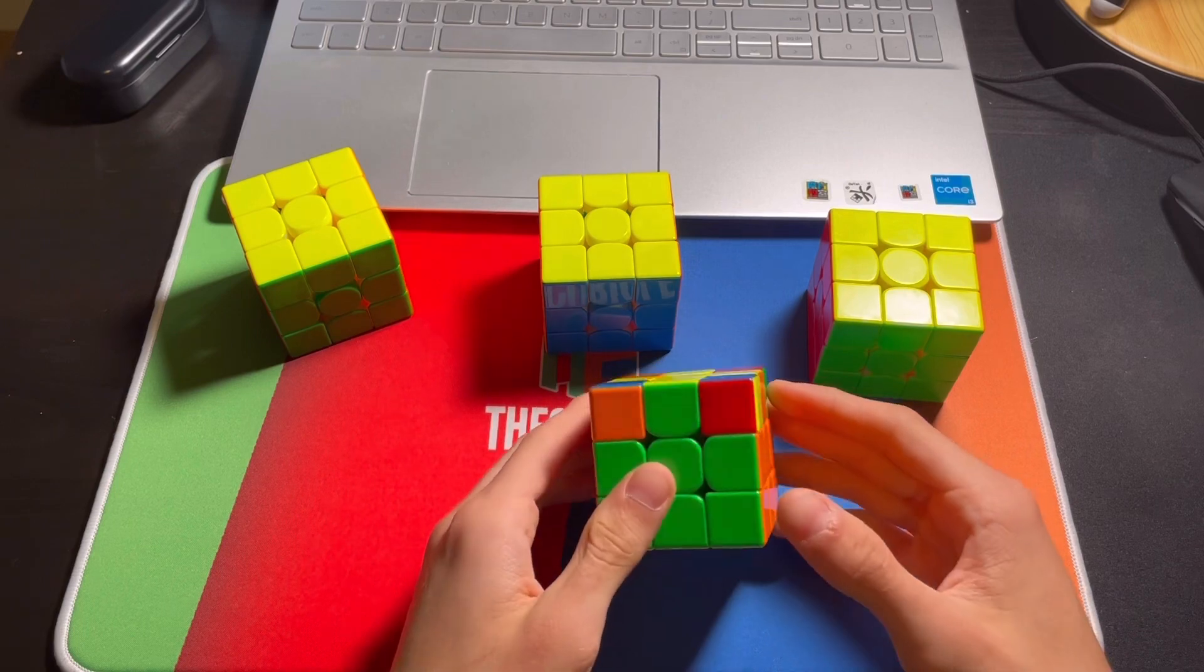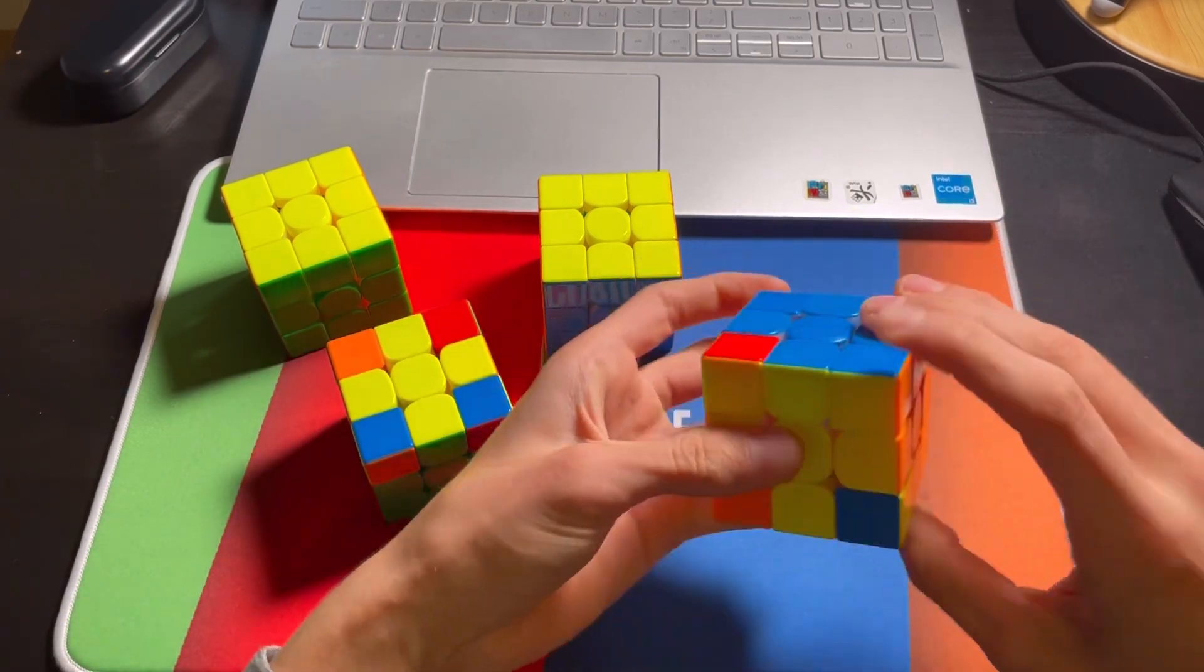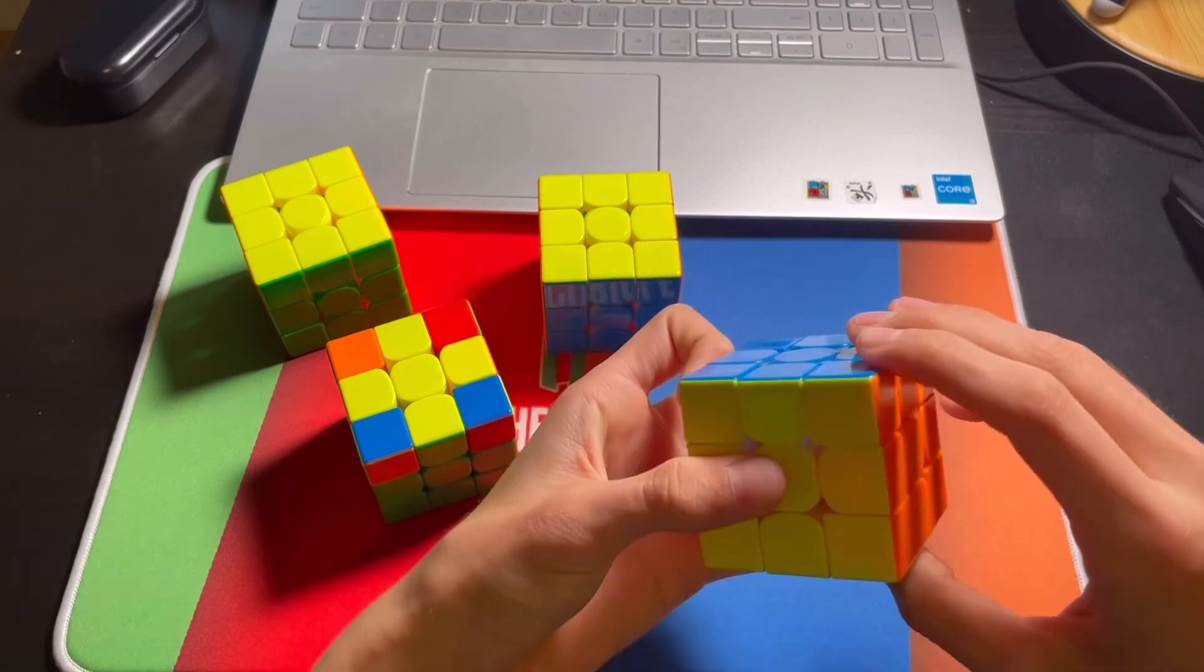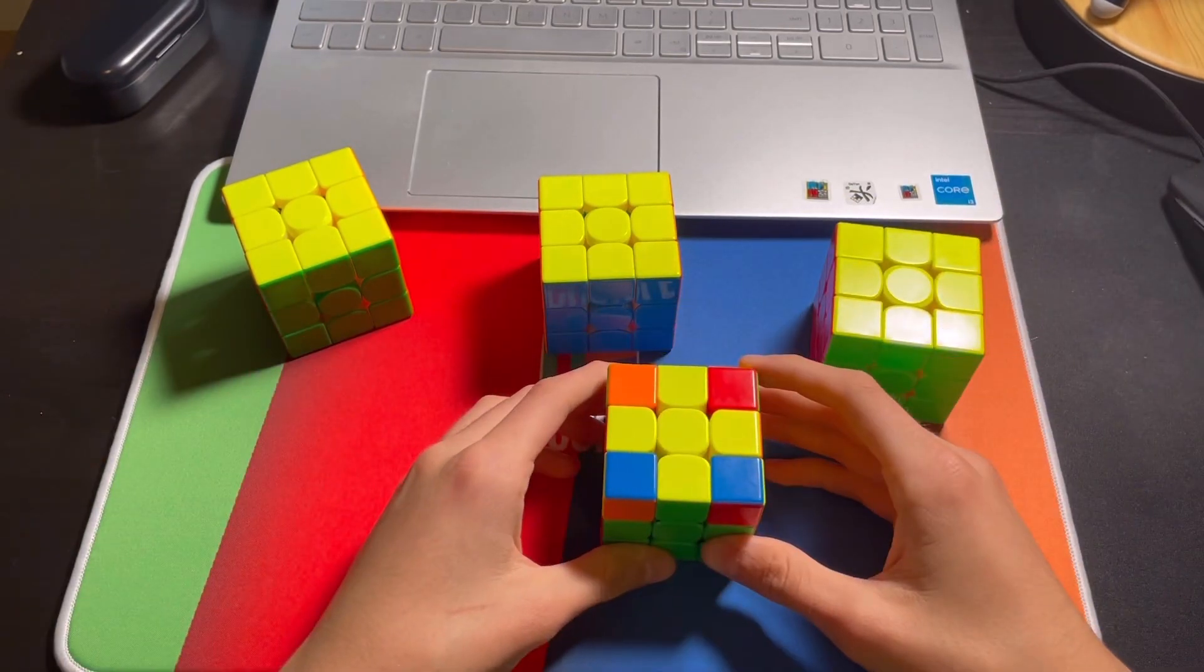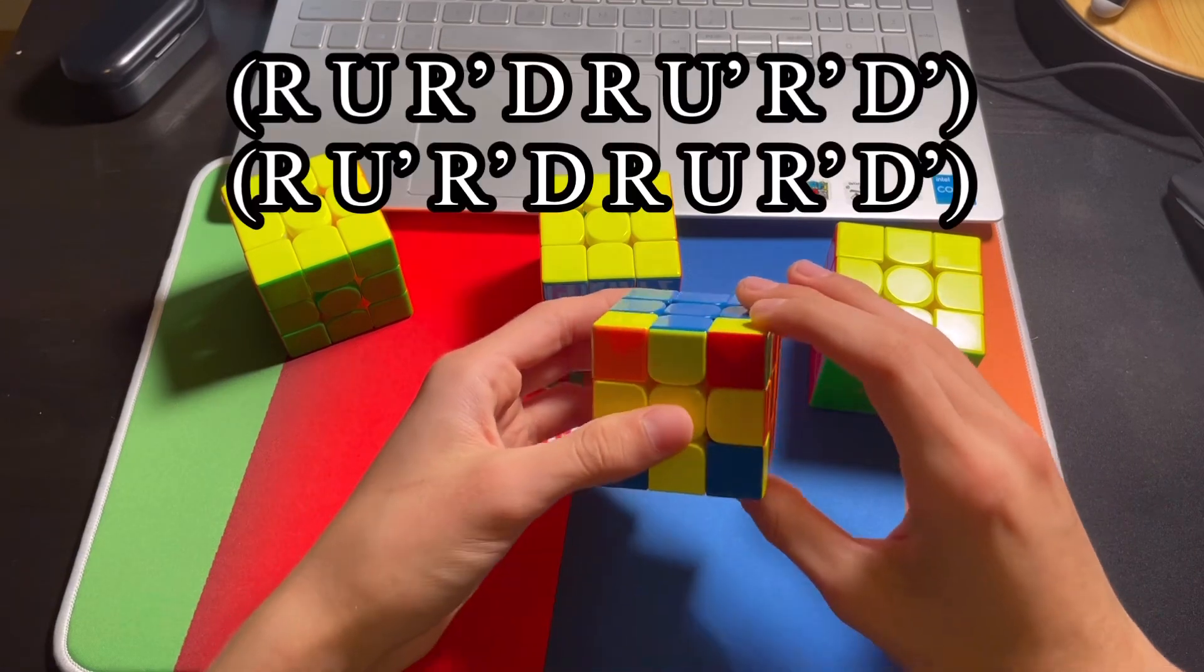For this, we're basically doing a variation on the E-perm, which instead of doing this, we're doing that, except we're doing the second half of the algorithm first, and the first half of the E-perm second. So the second half goes like this,